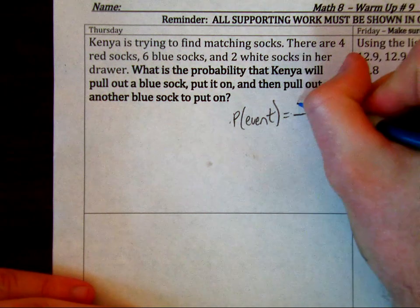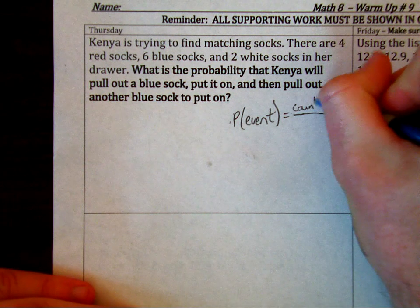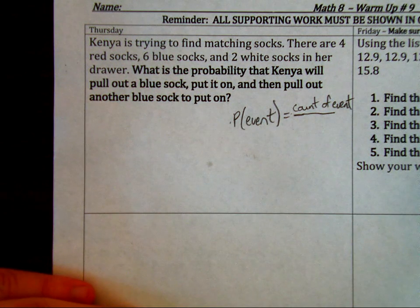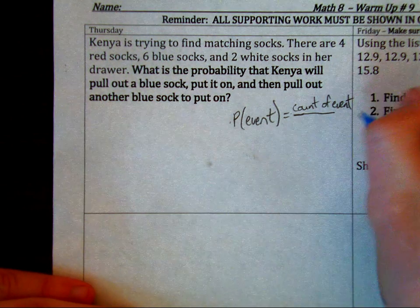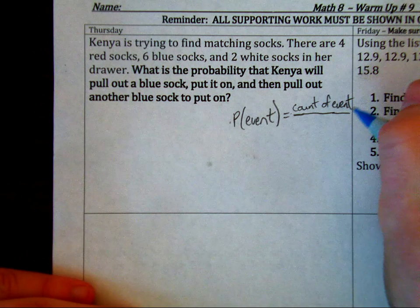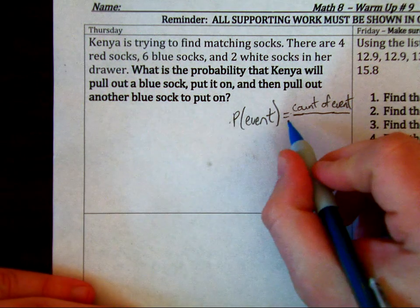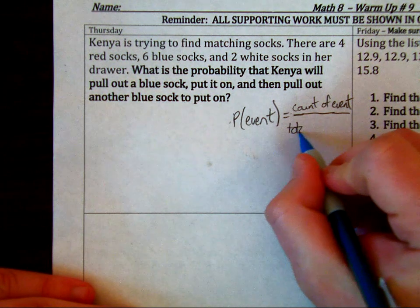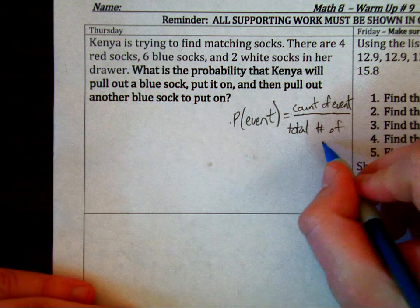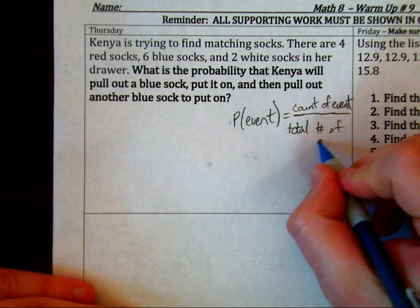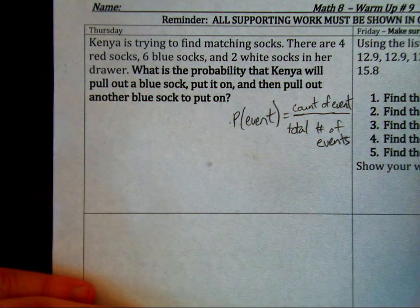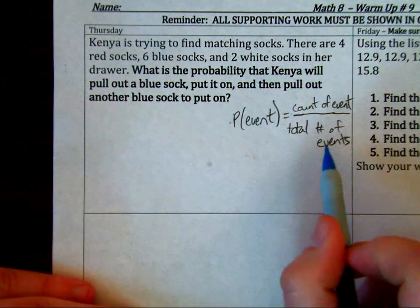The count of event means how many times did it happen, how many are there. If you can count, you can find that out. And then on the denominator, it's just the total number. Let's say of events. For example, in this problem we would be talking about socks.